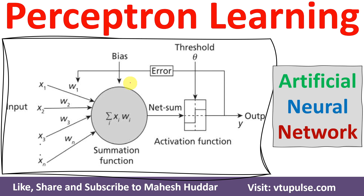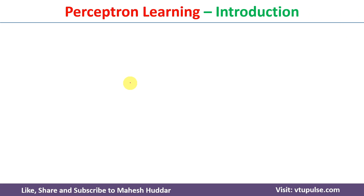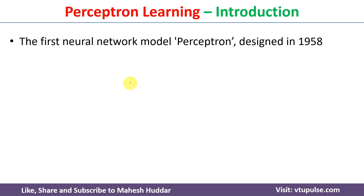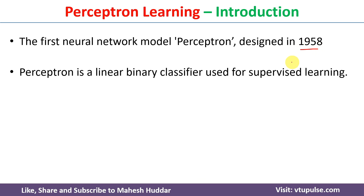Welcome back. In this video I will discuss what is perceptron learning and how perceptron learning works in an artificial neural network. The first neural model, also known as perceptron, was designed in 1958. Perceptron is a linear binary classifier used for supervised learning.